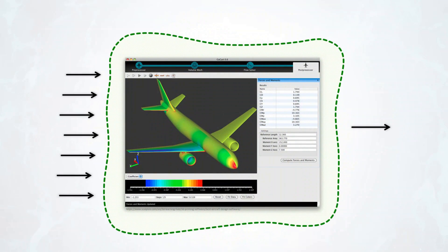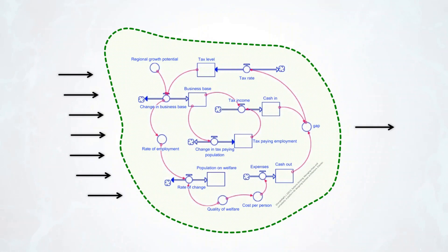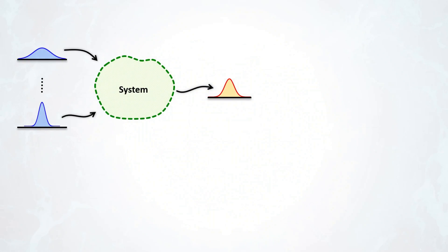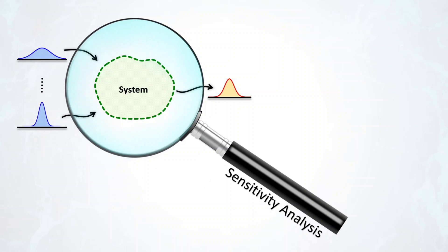Or you might have an aircraft model and want to know what factors about geometry or materials control a design variable. Or imagine there is a socioeconomic model that helps authorities in policymaking and they need to know what factors are important, what they should give serious consideration to, and what factors are not as important. For any of these examples, what sensitivity analysis does is peer inside the system, decompose the variability in the output, and tell us what portion of it comes from what input.